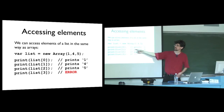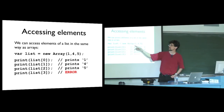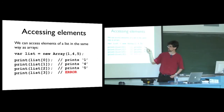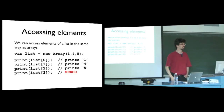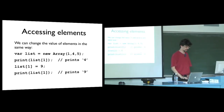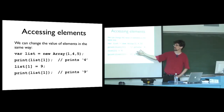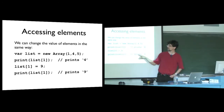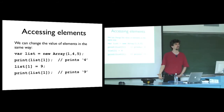We can access elements of a list in exactly the same way as an array, using square-bracket notation. So if we have a list of three things (1, 4, 5), we look at elements 0, 1, 2 and they're 1, 4, and 5. If we try to look at element 3, that's an array out-of-bounds error — exactly the same as with arrays. We can change values in the same way: setting list[1] to 9 changes the list from (1, 4, 5) to (1, 9, 5).